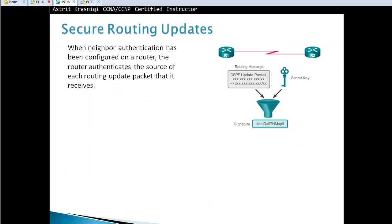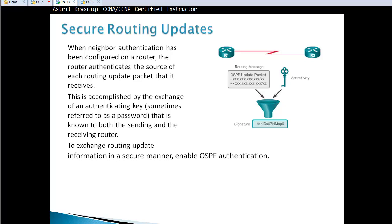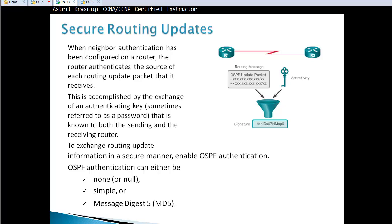Securing routing updates: when neighbor authentication is configured on a router, it authenticates the source of each routing update packet received. This is accomplished by exchanging keys — sometimes called passwords — known to both the sending and receiving router. OSPF authentication can be none, simple clear-text authentication, or Message Digest 5 (MD5) authentication.